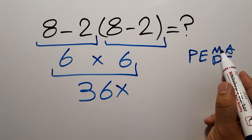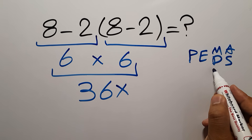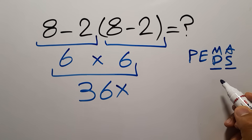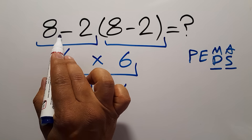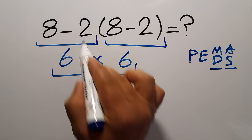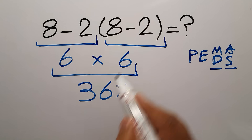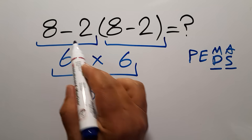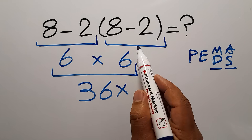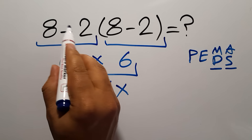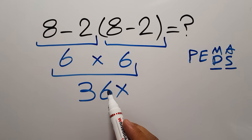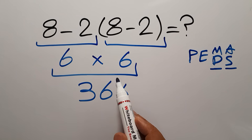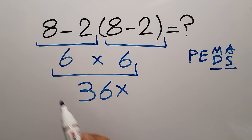Remember that multiplication and division have equal priority, and we have to work from left to right. And the same applies to addition and subtraction. Here, we have one subtraction, one multiplication, and this parentheses. In PEMDAS, parentheses has higher priority than other operations. So first, we have to do this parentheses, not this subtraction. And after this parentheses, we have to do this multiplication, and finally we have to do this subtraction.